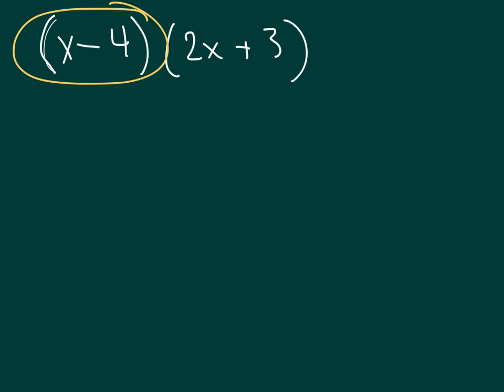So what we do is we take this and we distribute it to both of those terms. So it becomes 2x times (x minus 4) plus 3 times (x minus 4).